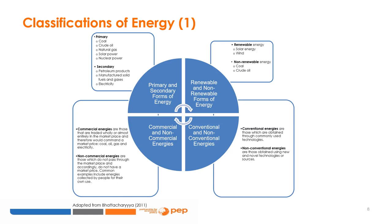Renewable and non-renewable forms of energy: if any primary energy is obtained from a constantly available flow of energy, the energy is known as renewable energy. Solar energy, wind and the like are renewable energies. A non-renewable source of energy is one where the primary energy comes from a finite stock of resources; drawing down one unit of the stock leaves fewer units for future consumption. For example, coal or crude oil comes from a finite physical stock that was formed under the earth's crust in the geological past, and hence these are non-renewable energies.